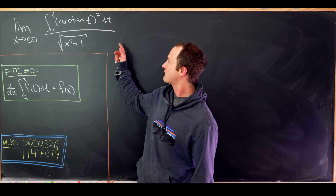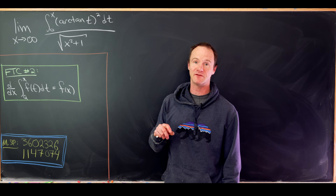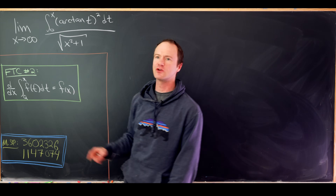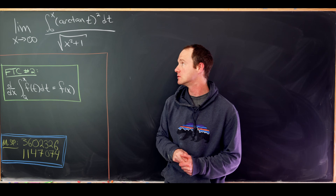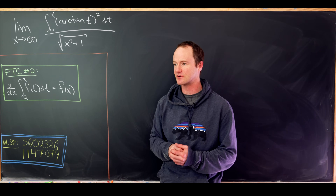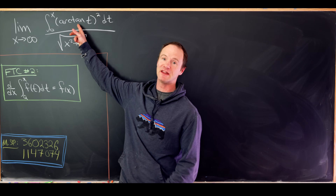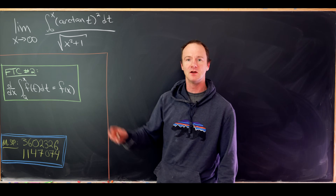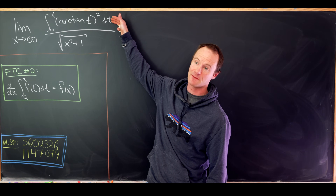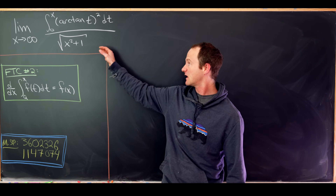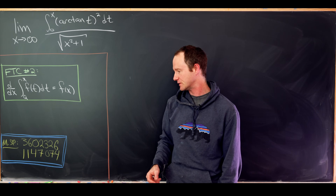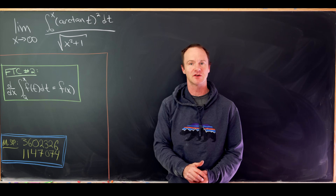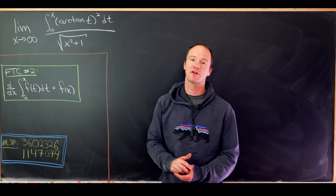Let's first note that this is an indeterminate form of type infinity over infinity. As x goes to infinity, the value of arctangent gets closer and closer to π/2. There's a convergence theorem that says if the argument does not approach zero, the integral cannot converge, so the integral diverges to infinity. The denominator also clearly goes to infinity. Since the numerator is an integral, we might want to use the Fundamental Theorem of Calculus part two.